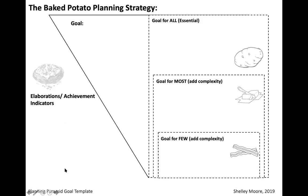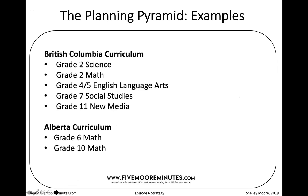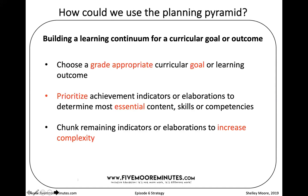Here are the examples I'm going to walk through today — BC and Alberta examples, all based on real classrooms I worked with real teams to make. I tried to get a range from primary to secondary and cross-curricular. In Alberta, since I'm just starting this work, I only have math examples, but as I get more I'll post them in the virtual folder I'll show you at the end. Let's get into it. Let's start with grade two — choose a goal, prioritize indicators, chunk the remaining into complexity.